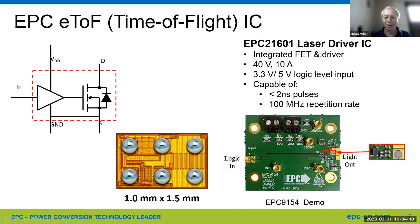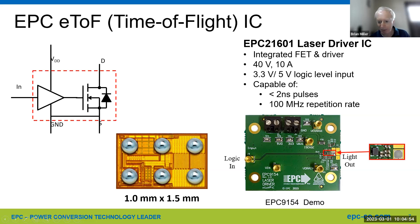This uses the example of the EPC2106 laser driver IC. This particular part is rated for 40 volts and 10 amp pulses. The input can be 3.3 or 5 volt logic level, and it's capable of less than 2 nanosecond pulses — very quick. It can also do 100 megahertz repetition rate. We also have a demo board or test board: there's a logic input, and on the side a place to put your favorite laser. The driver is so small it's really hard to see even in the expanded view, but it's in there to check the performance. It's all one piece and a cost-effective solution.